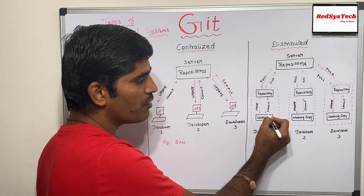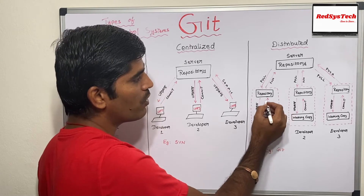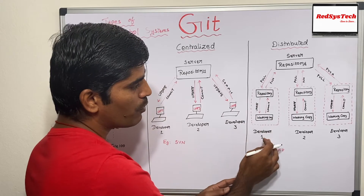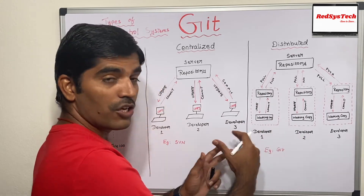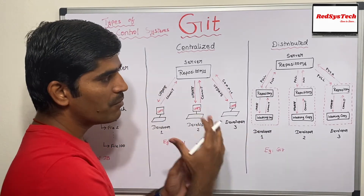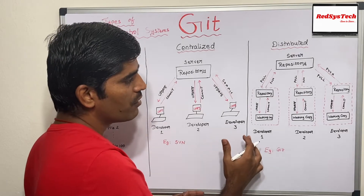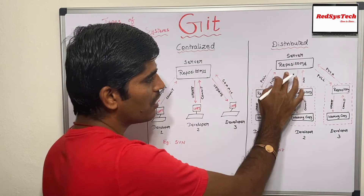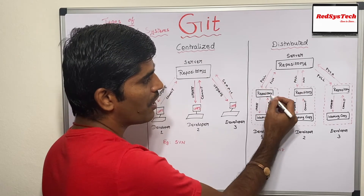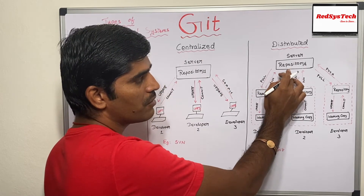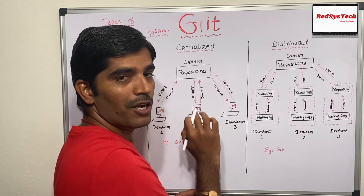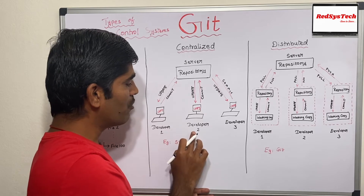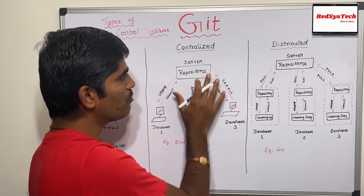Whenever your changes are ready, you first commit to your local repository. Once that is available in the local repository, you push it to the remote server. So developer 1, developer 2, and developer 3 can work individually. The biggest advantage is that if the central server crashes, developer 1 still has a copy of the central server's code in his local repository.